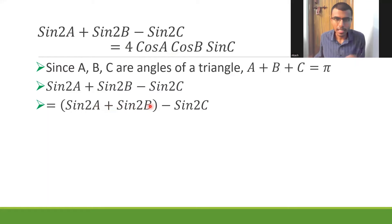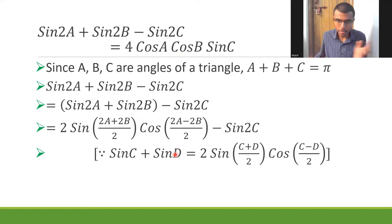I want to apply a formula to these two terms. You're familiar with sin C plus sin D, right? Sin C plus sin D is 2 sin (C plus D by 2) cos (C minus D by 2). So basically I'm going to apply it on these two terms. In place of C and D here we have 2A and 2B, so here we have 2 sin (2A plus 2B by 2) cos (2A minus 2B by 2) minus sin 2C. Now if you observe, 2 and 2 would get cancelled within the bracket, so I will have 2 sin (A plus B) cos (A minus B) minus sin 2C.